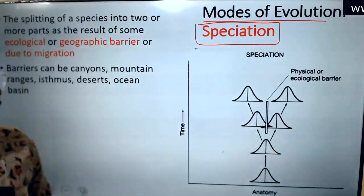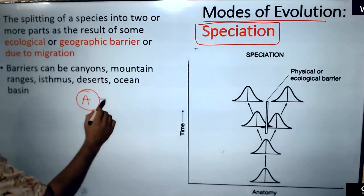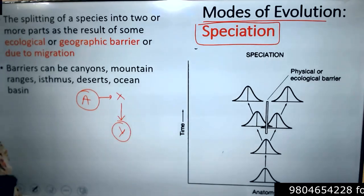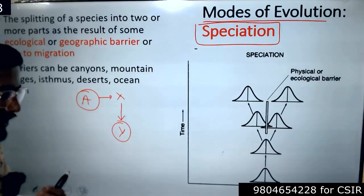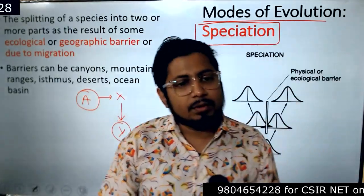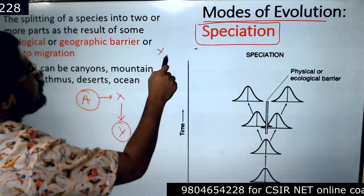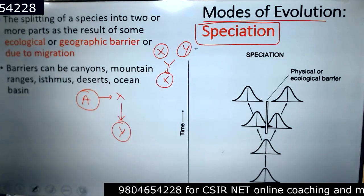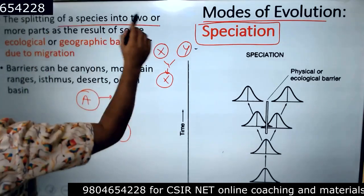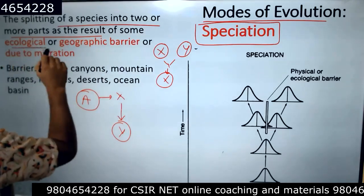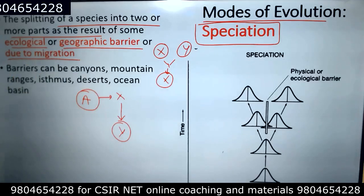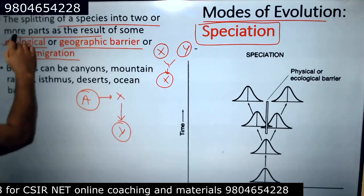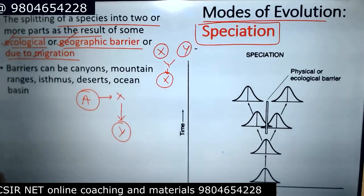When we talk about speciation, obviously there is an ancestor — let's say species X. Now this X will become species Y. We call it a species because members of a species should be able to reproduce. If two groups X and Y cannot reproduce with each other, we call them different species. So the splitting of a species into two or more parts as the result of some ecological or geographical barrier, or due to migration, is termed as speciation.